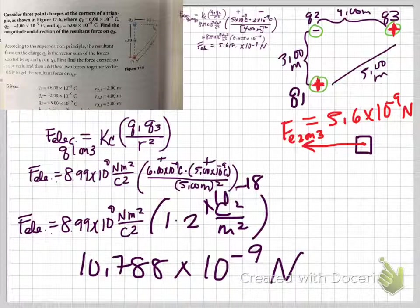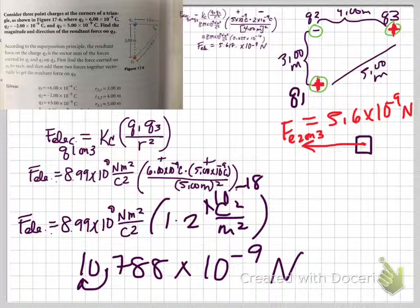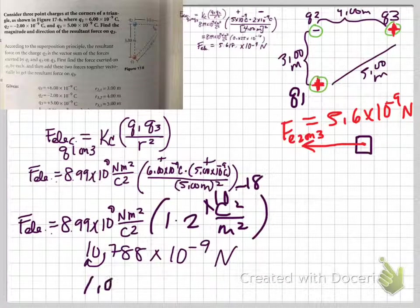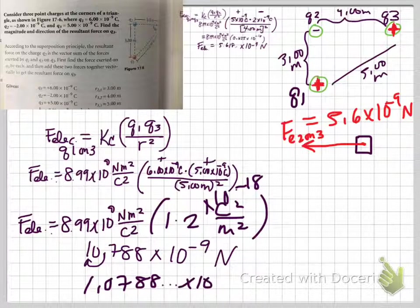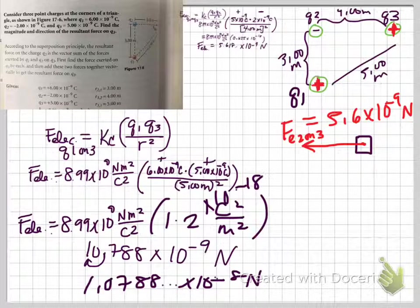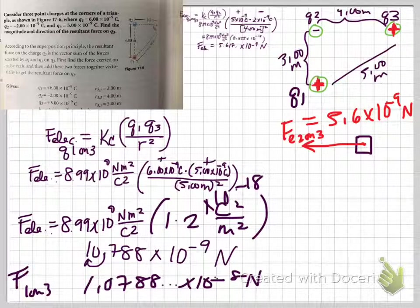I'm going to move decimals. 10.78 times 10 to the 9 plus negative 18 times 10 to the negative 9th newtons. And I've got to move decimals. That would be going towards zero. So that would be times 10 to the negative 8th. Did I get that right? Feel free to fact check me. I'm terrible with left and right, and it translates to having problems moving decimals in scientific notation. We all got our kryptonite. That's mine.